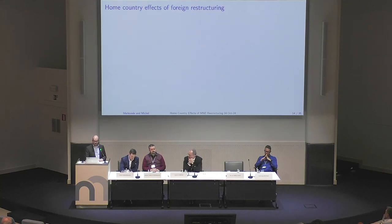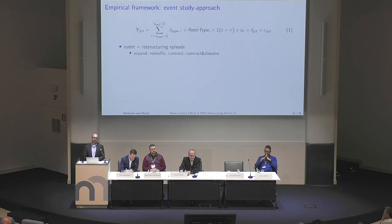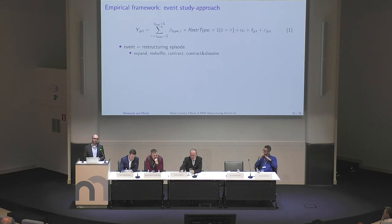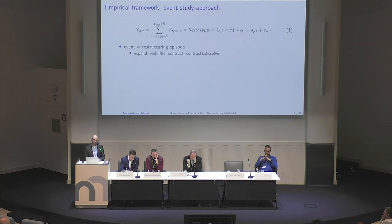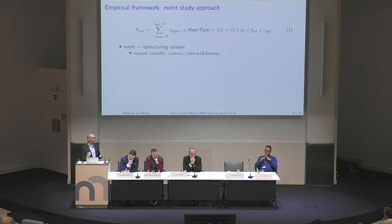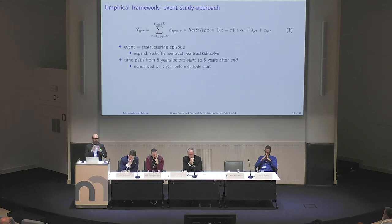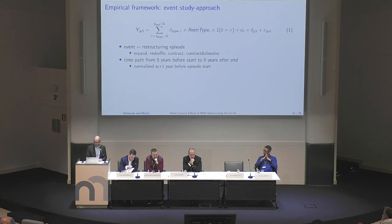For home country effects, we use an event study approach to see how different outcomes at domestic parents and domestic affiliates respond to restructuring episodes. Our events are episode endings — expansions, contractions, or reshuffling. For contractions, we differentiate between those that end with a strictly positive number of affiliates (the firm stays a multinational) and those where all affiliates are gone — which we label 'contract and dissolve.' The event study time path runs five years before to five years after the restructuring episode, normalized with respect to one year before the episode.